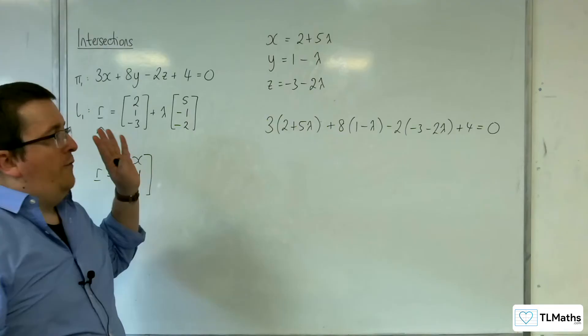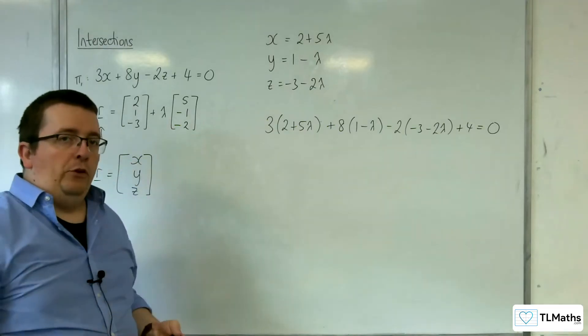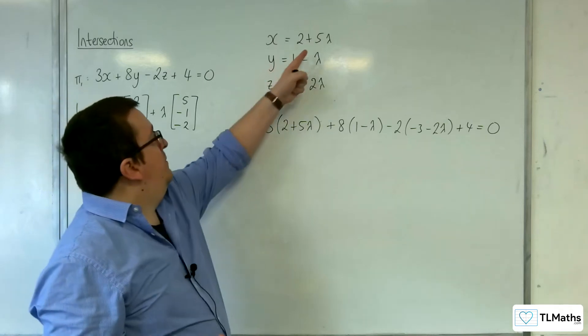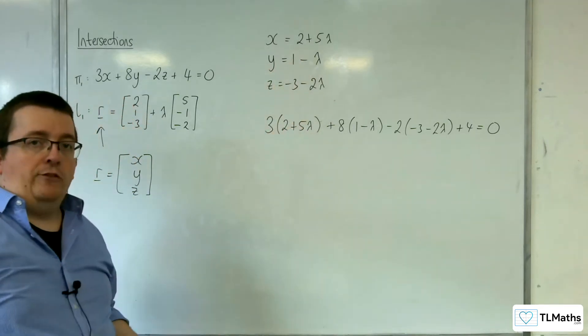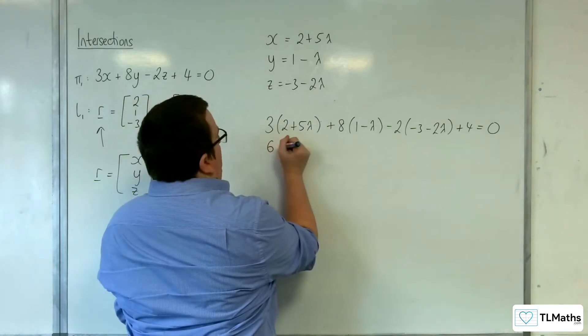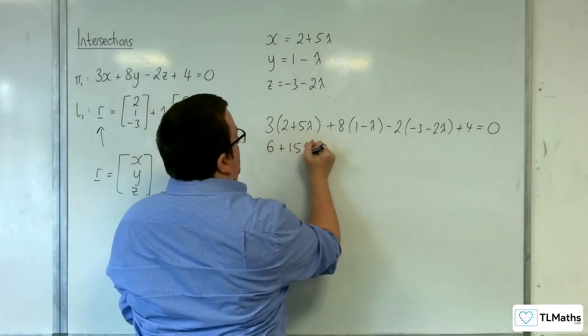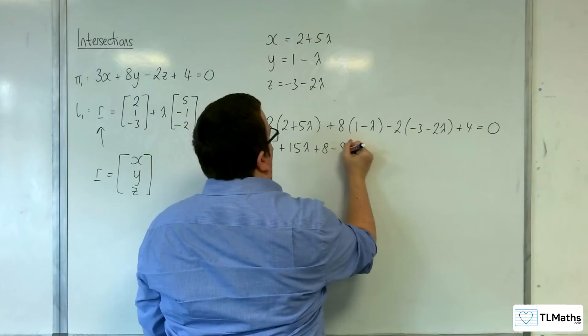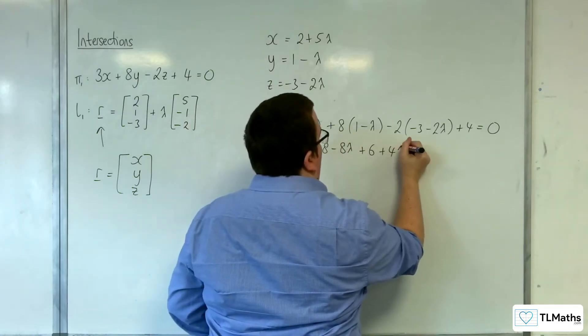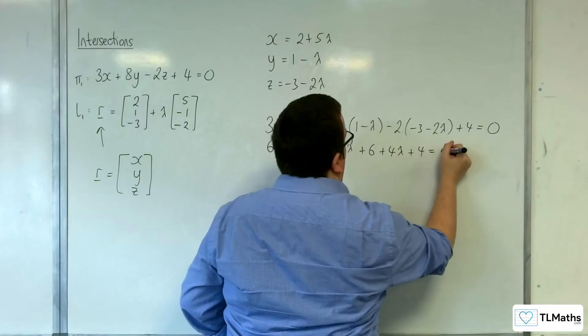OK, so if I expand this out, solve for lambda, then I can substitute the lambda back in here to work out the X, Y and Z that works. So 6 plus 15 lambda, plus 8 take away 8 lambda, plus 6 plus 4 lambda, plus 4 equals 0.